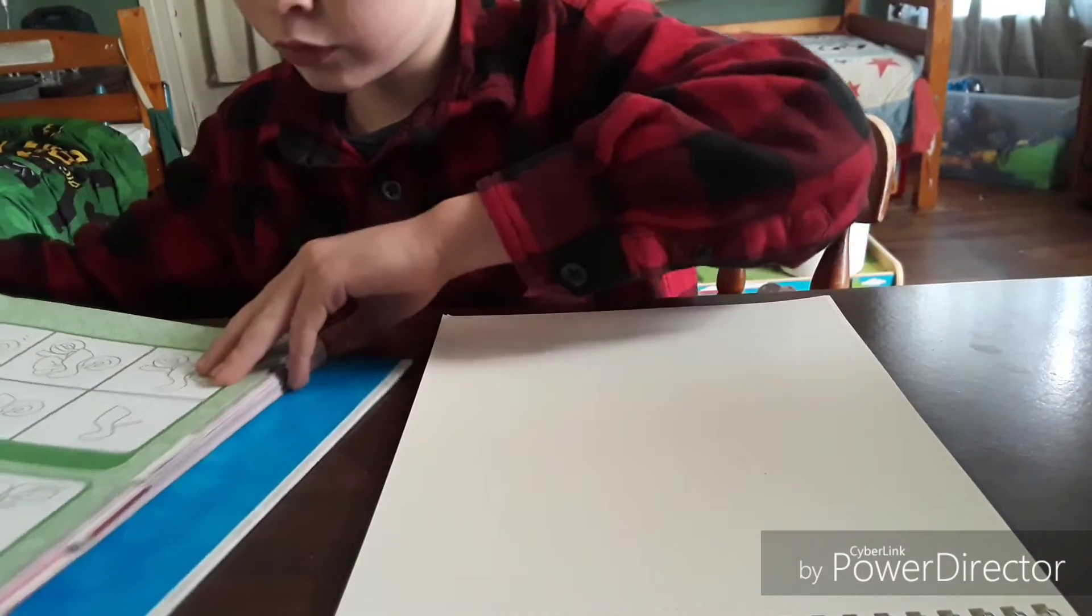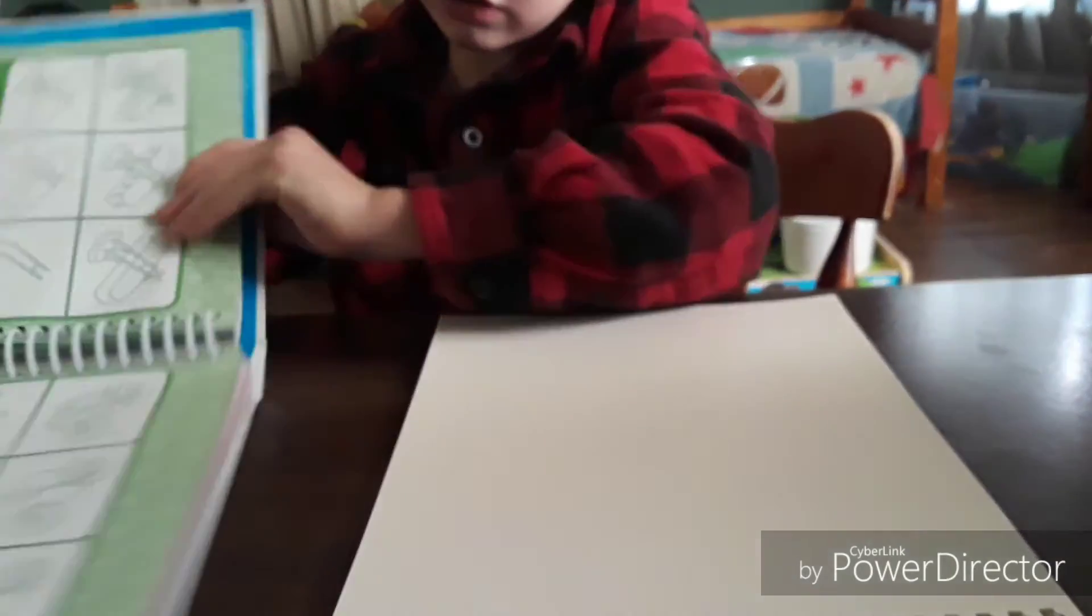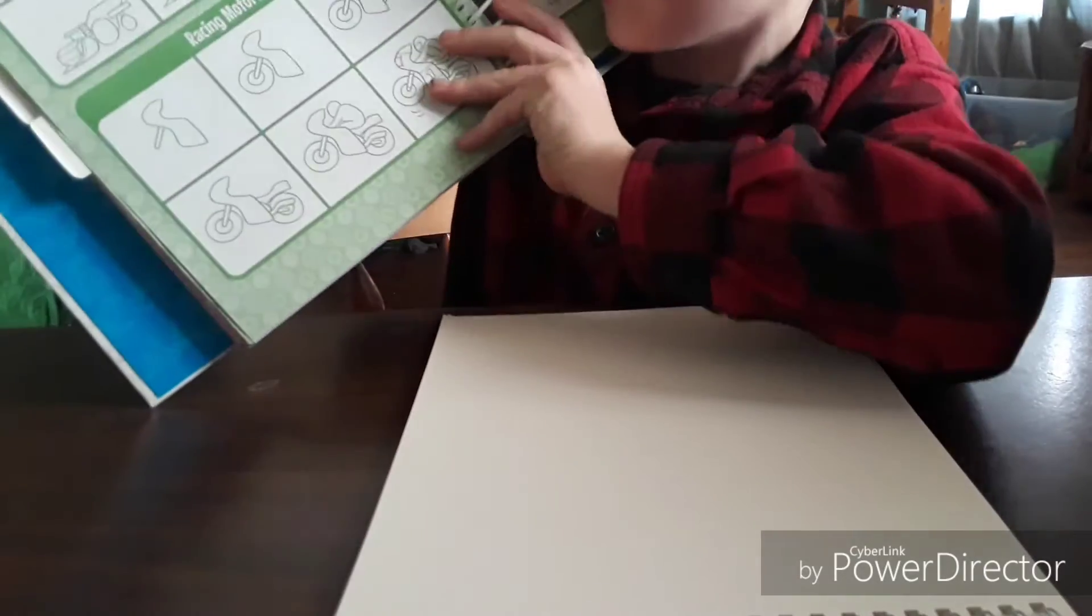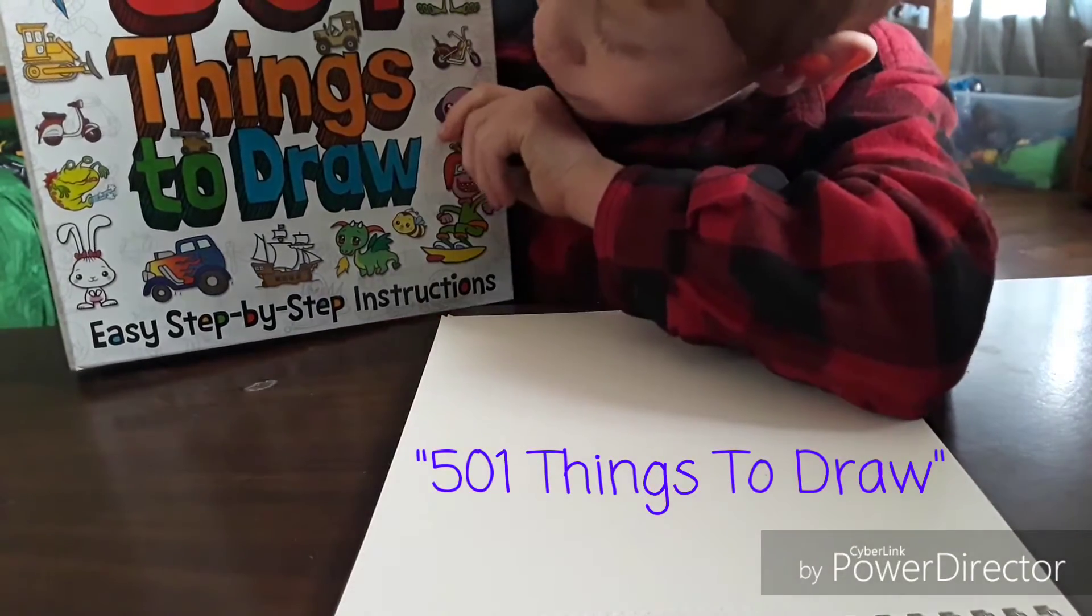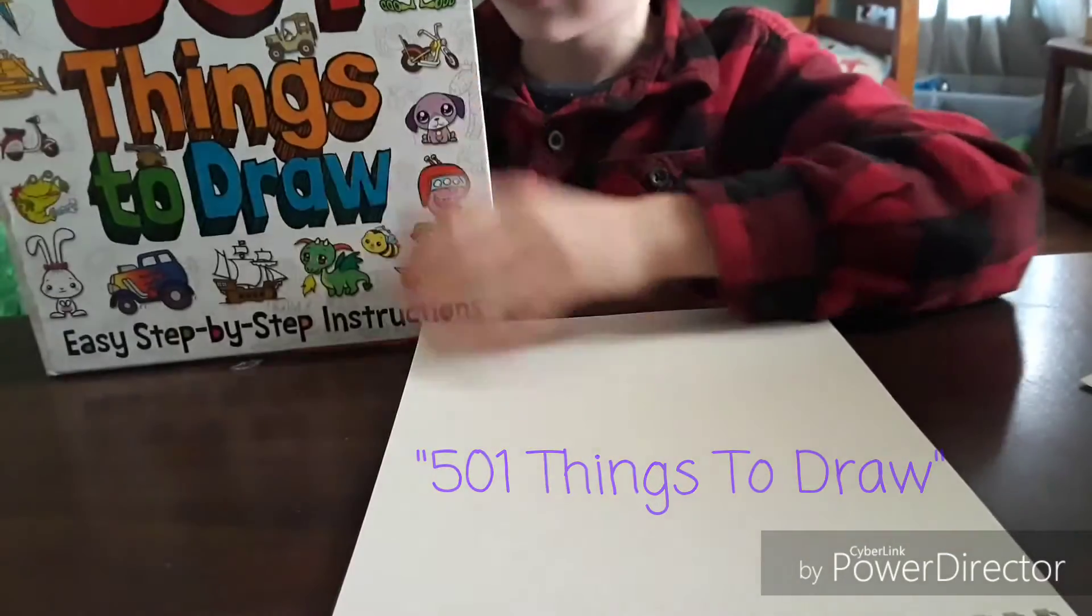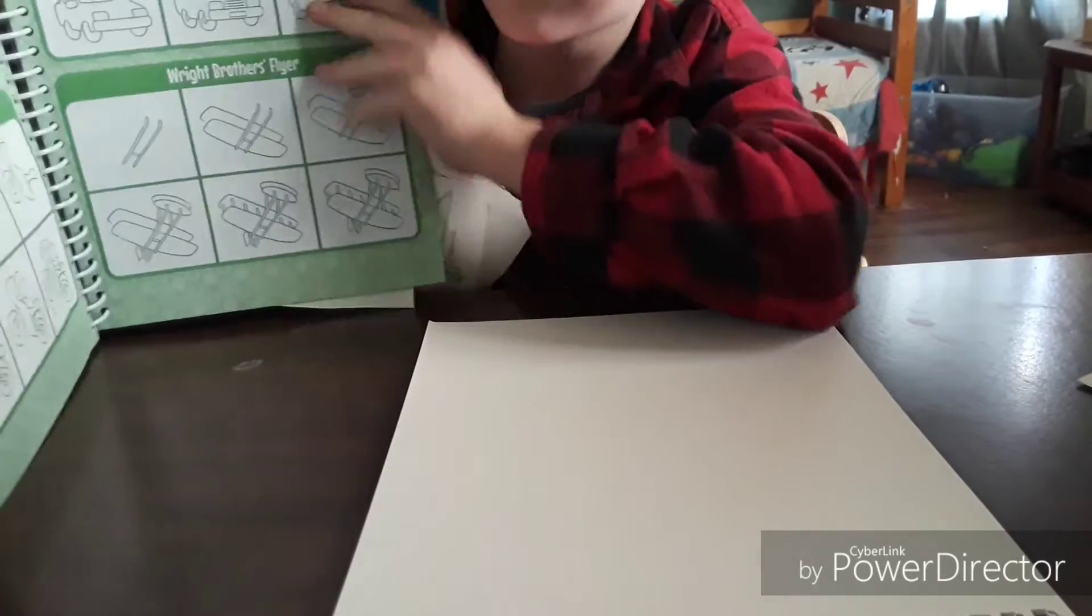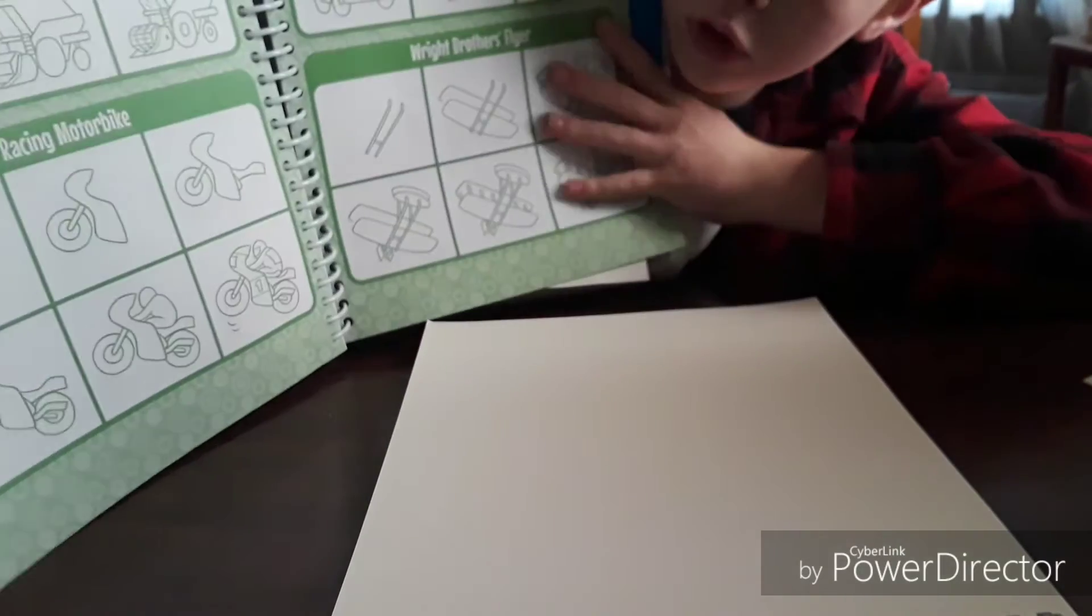So first, if you want to, go buy one of these books. It's called 501 Things to Draw. You can buy it somewhere like Walmart. You can draw a lot of stuff, so we're going to be making this motorcycle.